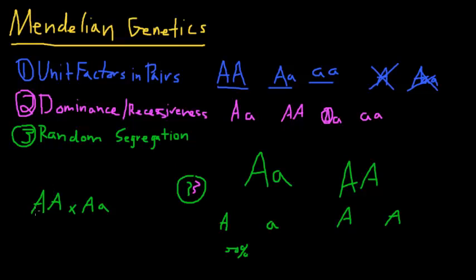This parent has a 100% chance of passing on the dominant allele. We have a 50% chance of passing a capital A, and a 50% chance of also passing a capital A.